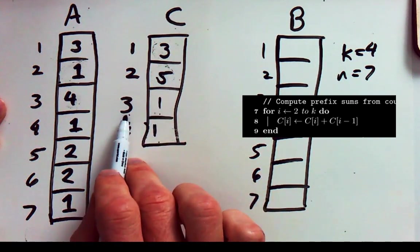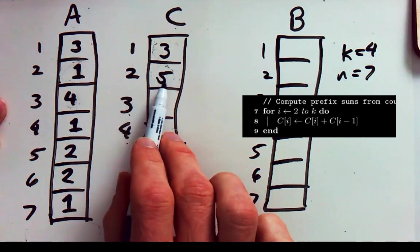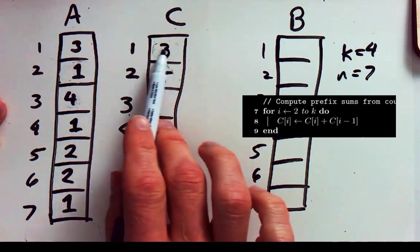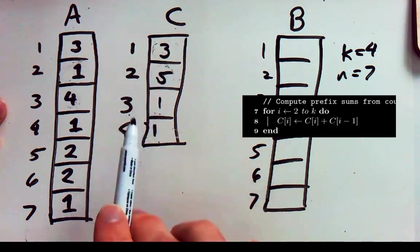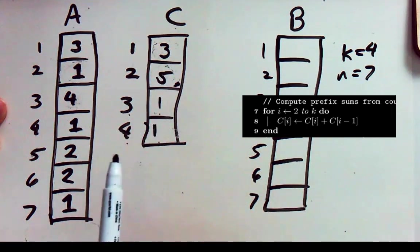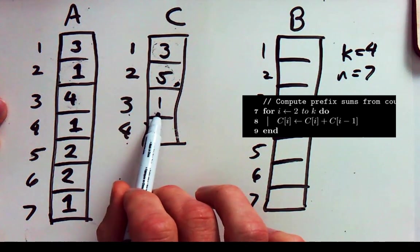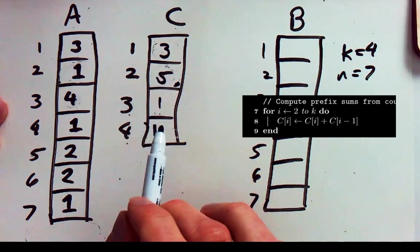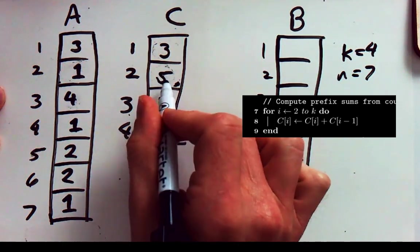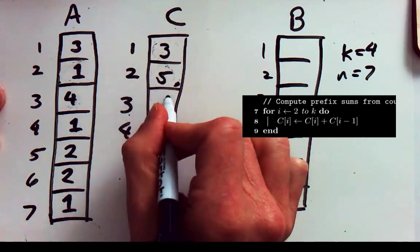Now when we get to 3 there are a total of 5 elements that are going before any of the 3s. There are the 3 1s and the 2 2s and a total of 5 elements. So currently this box right here represents the total number of elements that come before 3. So the 1 3 will end up going at position 6. So we'll go ahead and take what's in box 3 and add it to box 2. Replace box 3.